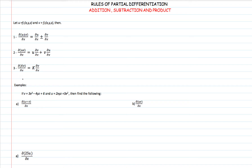There is no magic to that. In this example we have a function v which is 3x cubed minus 4yz plus 6, and u which is 2xyz plus 3x squared. We have three cases that we have to use these rules to solve. We are going to start with the case of a constant. First we identify what the constant is here, and the constant is 25. So we have 25 outside and then we have del u by del x.